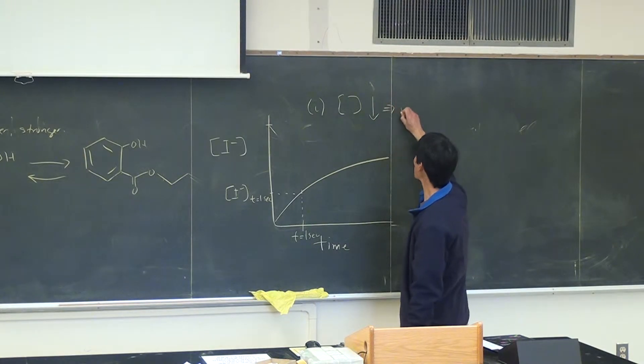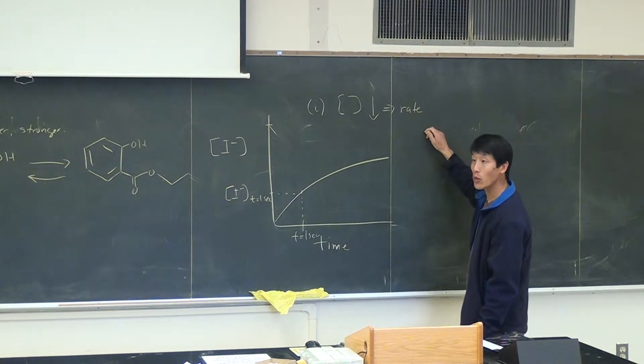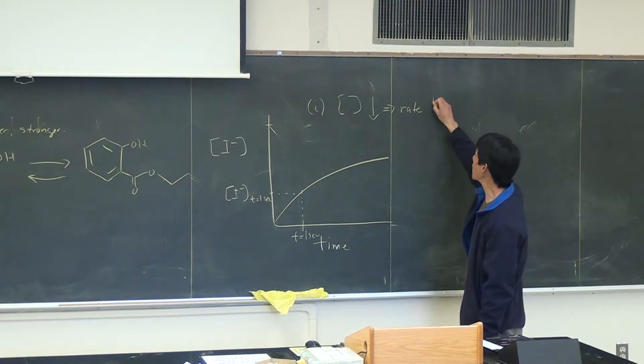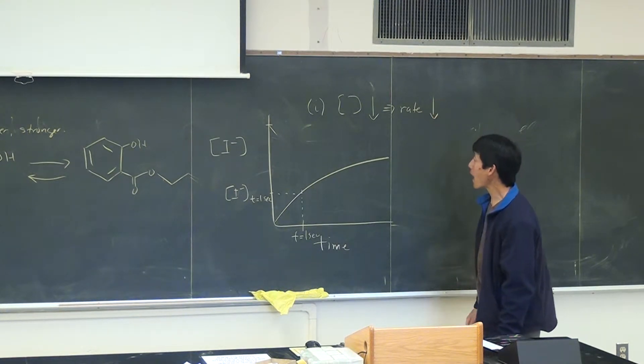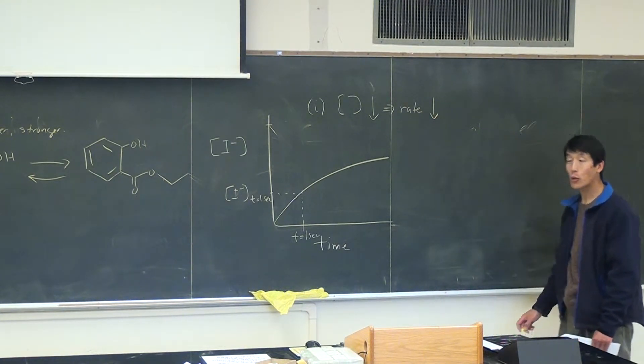So if you decrease, what happens to the rate? Does the rate increase or decrease? Decrease. It actually decrease, which means that what happens to the amount of I2 which is formed?